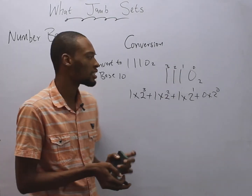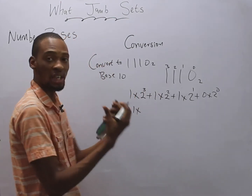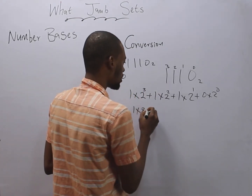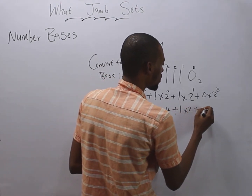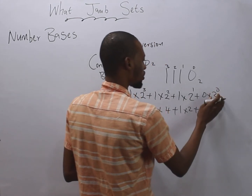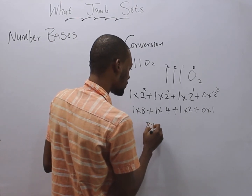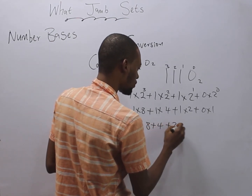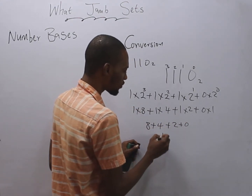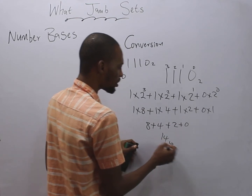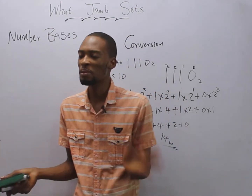We simplify: one times two to the power of three is two times two, four times two, which is eight. Plus one times four, plus one times two, plus zero times one — because any value raised to the power of zero equals one. So this gives us eight plus four plus two plus zero, which is eight plus four equals twelve, plus two equals fourteen. So this gives you fourteen in base ten. That's how you convert from base two to base ten.